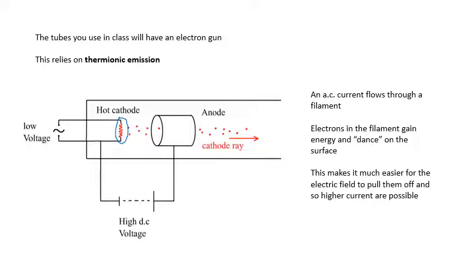And then a big voltage, a high DC voltage, pulls them off. And then the fact that the cathode is hot makes it much easier to pull them off, and you get higher currents and you can do more stuff. So this is an electron gun. Be able to describe thermionic emission - therm, you know, heat energy, ionic because it's charged particles - thermionic emission.